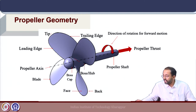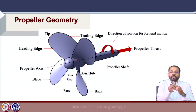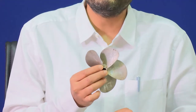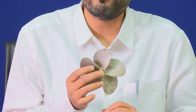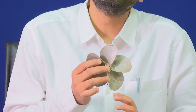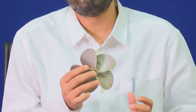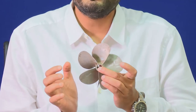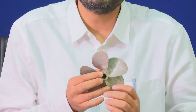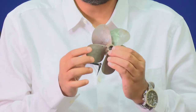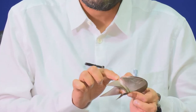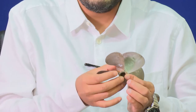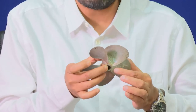Now let us look at a model propeller. This is a model propeller used for testing in the towing tank, where we test the propeller open water characteristics as well as the behind-hull performance to estimate ship powering. This model is made to a particular scale as per the requirement of testing. Here we see a central part which is the hub, on which the blades are mounted. In this particular case it is a five-bladed propeller.